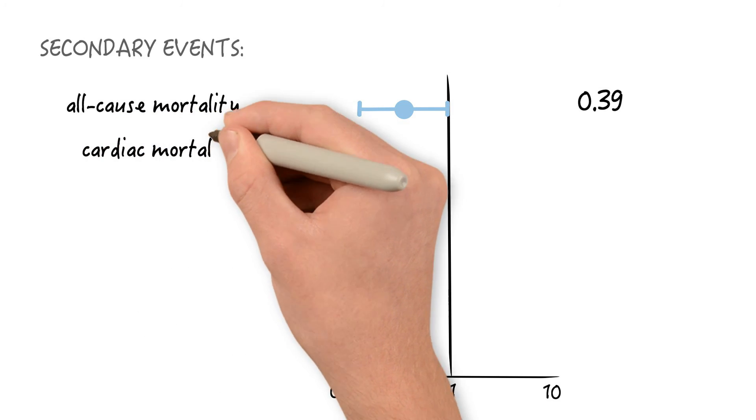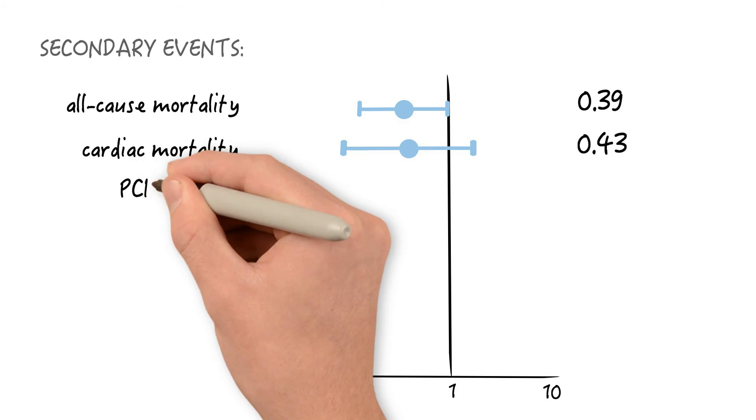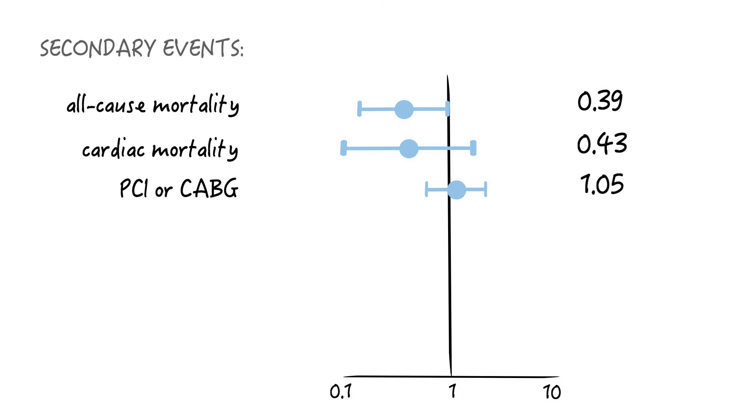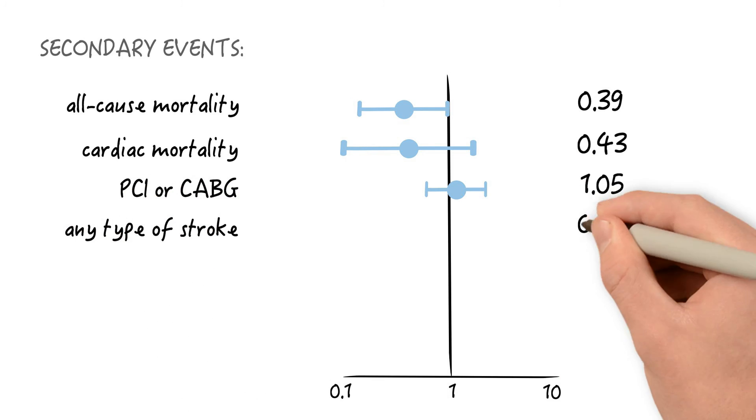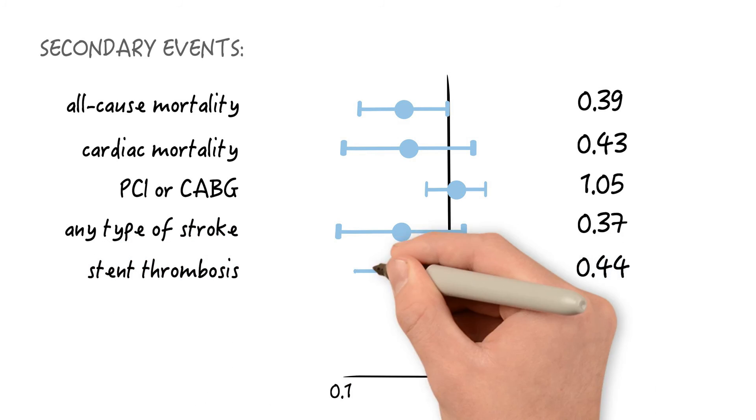Cardiac mortality hazard ratio of 0.43, not significant. PCI or CABG, 1.05, not significant. Any type of stroke, 0.37, not significant. Stent thrombosis, 0.44, also not significant.